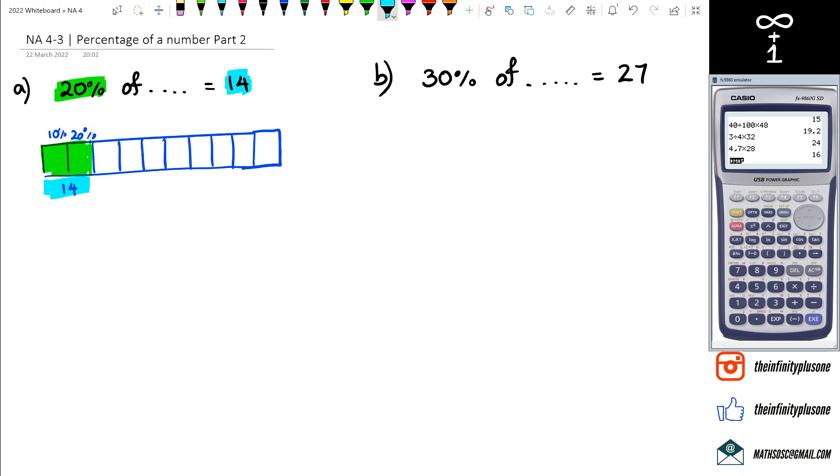So what are we going to do here? If 14 is actually worth two blocks, we can actually split this up to 7 and 7. Basically what this is telling us is that 10% is equal to 7, which means 100% is actually equal to 70.